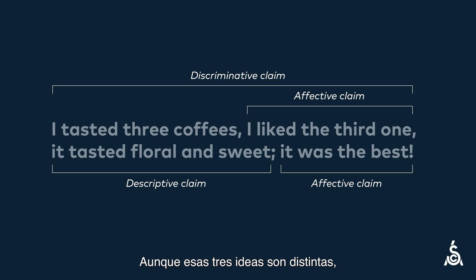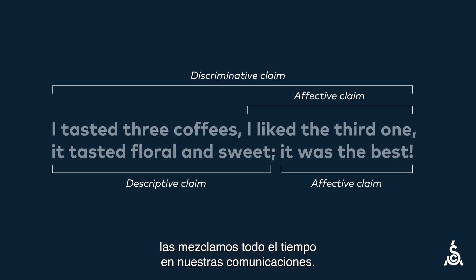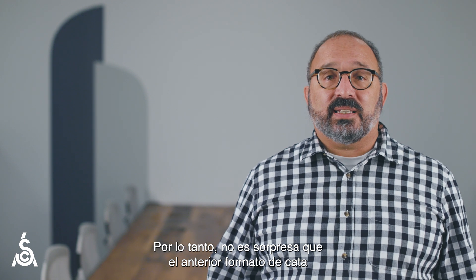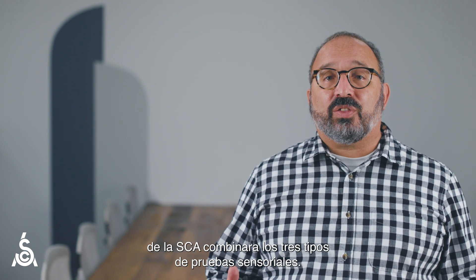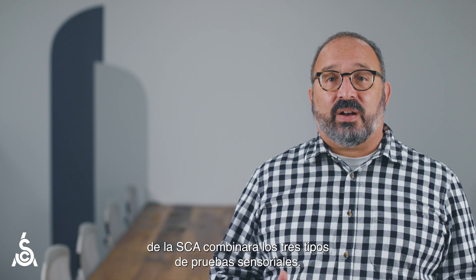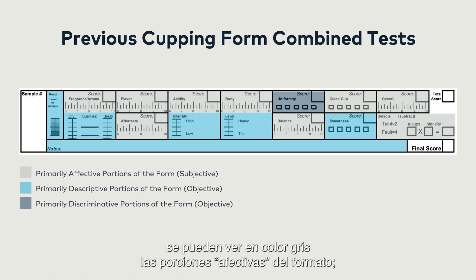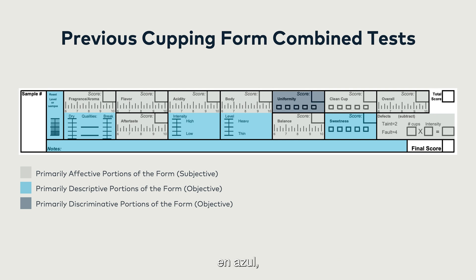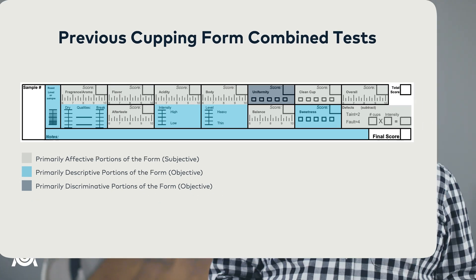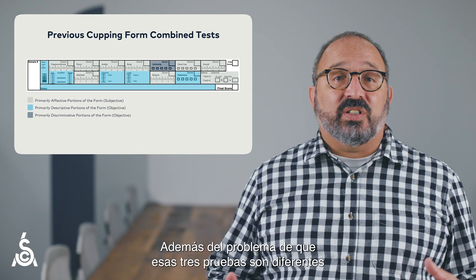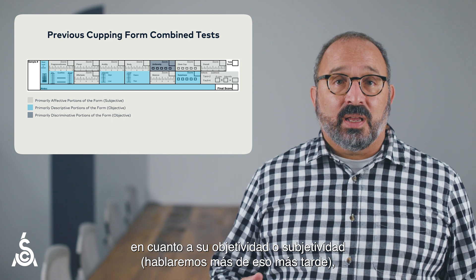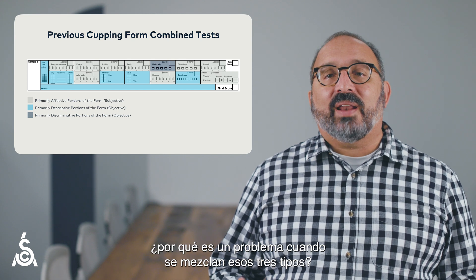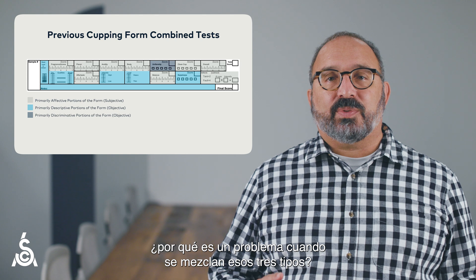These three ideas are distinct, yet we mix them up in our communications all the time. Therefore, it's no surprise that the previous SCA cupping form combined the three ideas of sensory tests together. In this image, you can see the affective portions of the form in gray, the descriptive portions in blue, and the discriminative portions in dark gray. Aside from the problem that these tests are different in terms of objectivity and subjectivity — more on that later — why does it matter whether these types of tests are mixed?